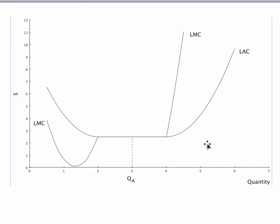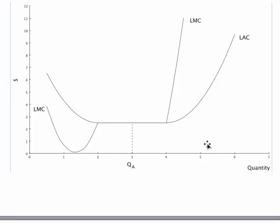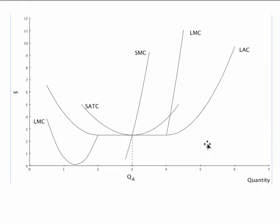Suppose the firm builds a plant with capacity K sub A in the range of constant returns to scale, that is chosen optimally to produce Q sub A. Since the slope of long run average cost is zero at the resulting level of output, short run average cost will be minimized at that point. Hence, short run marginal cost crosses short run average cost there, and all four cost curves intersect at Q sub A.